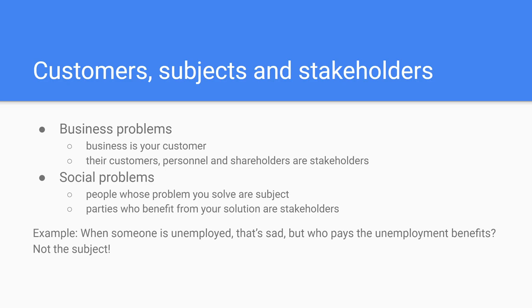In solving social problems, your solution is for the benefit of the subjects — it improves their lives. The means to solve the problem for the subjects is provided by the stakeholders who benefit from your actions.